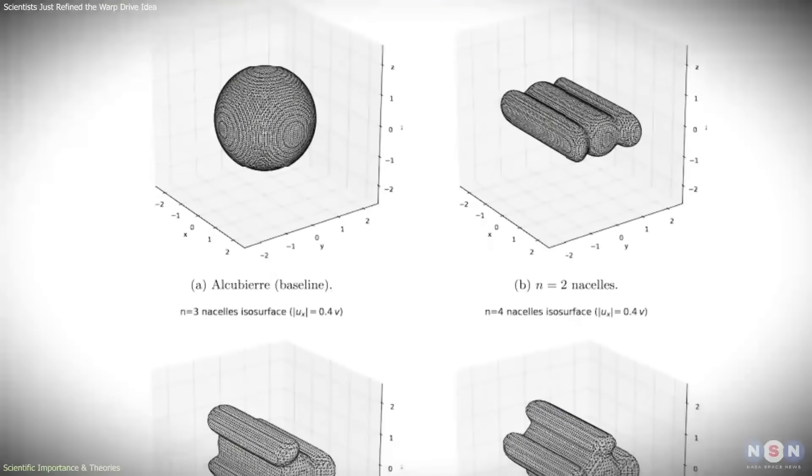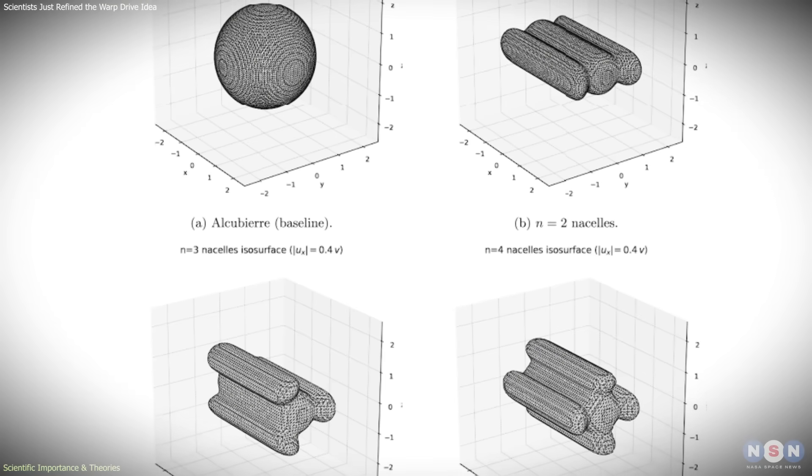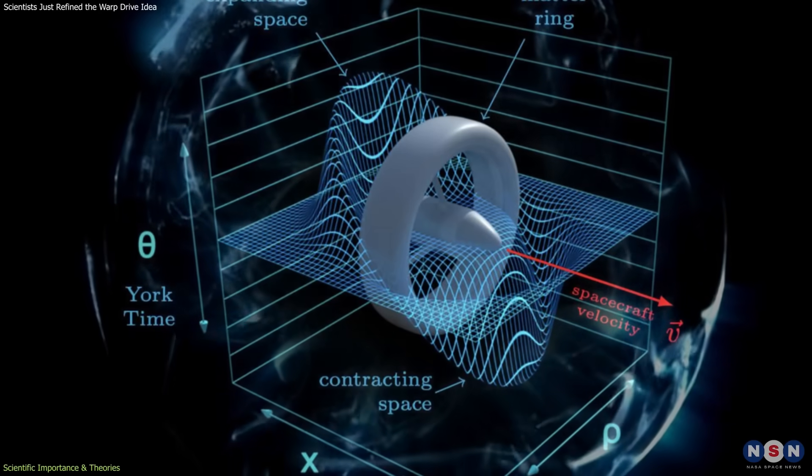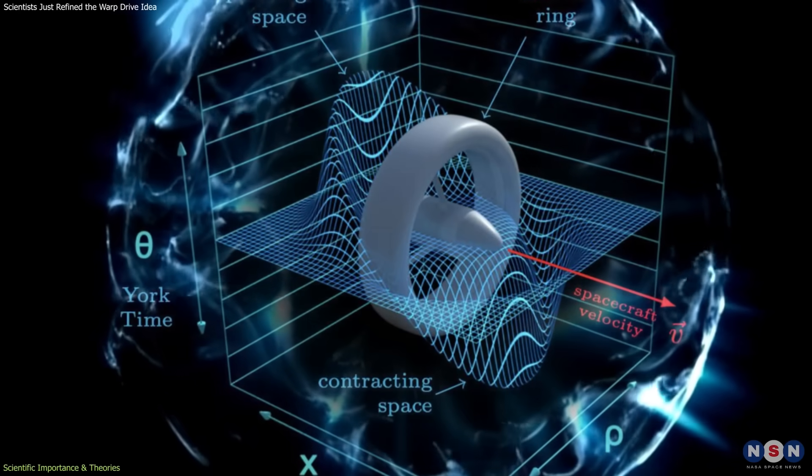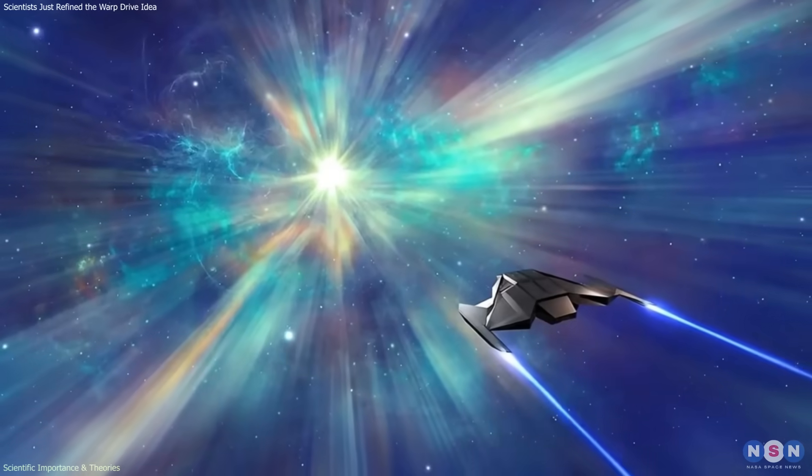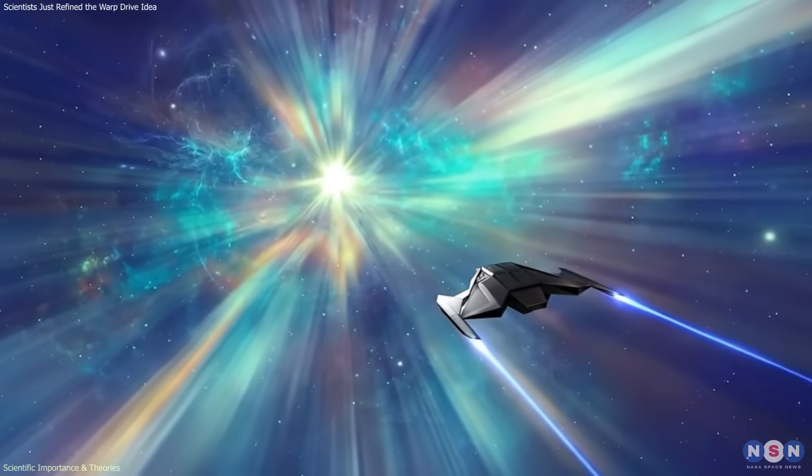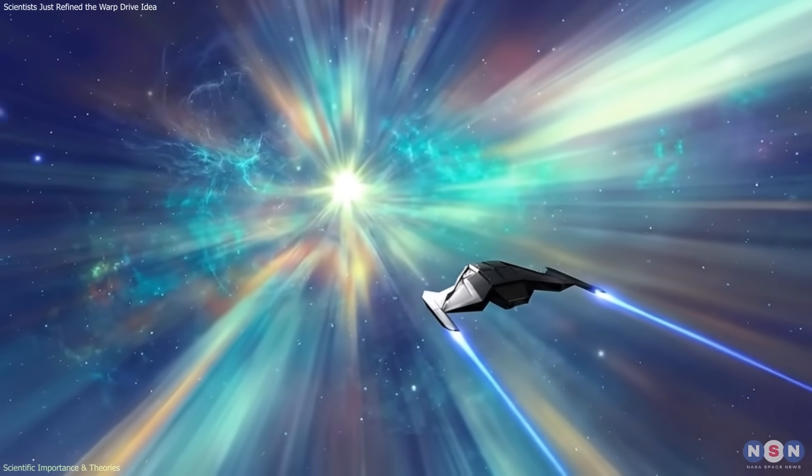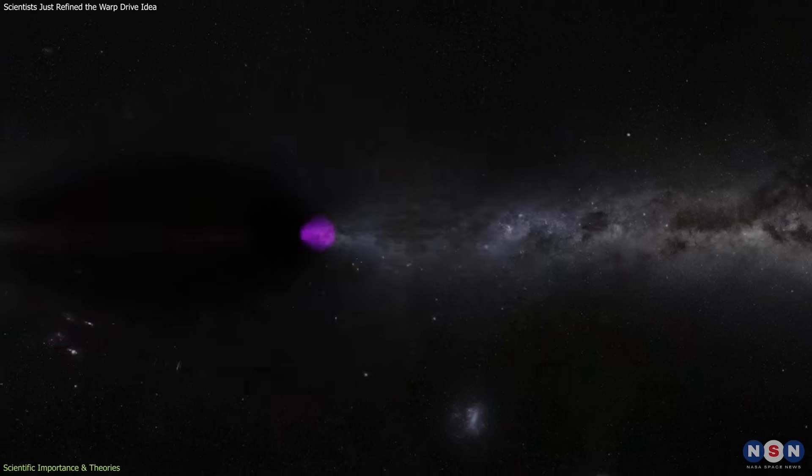This has theoretical consequences. It expands the range of allowable spacetime topologies and demonstrates that warp-like behavior is not tied to one specific shape. That, in turn, allows physicists to explore trade-offs between stability, energy distribution, and curvature intensity.